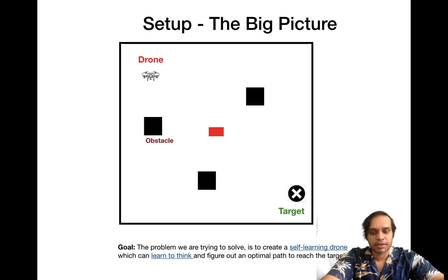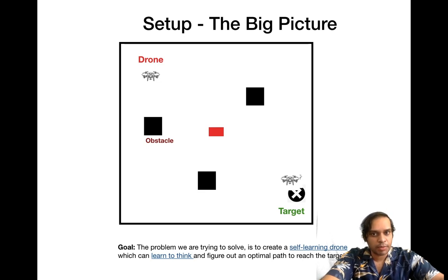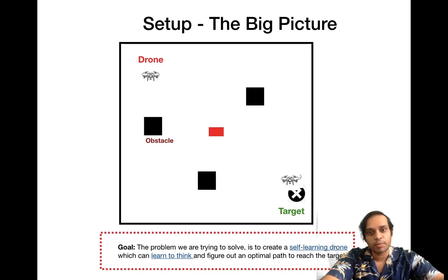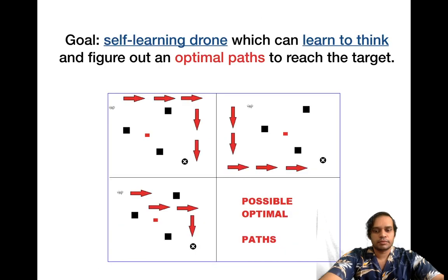The drone has to find a path — here is one example moving all the way to the right and down, hitting the target. Here is another path the drone could possibly take: goes down, goes to the right, goes diagonally and hits the target. The purpose of the reinforcement learning paradigm is that the drone has to learn to think on its own and make up a policy or set of rules to travel from the source to the target without hitting any obstacles.